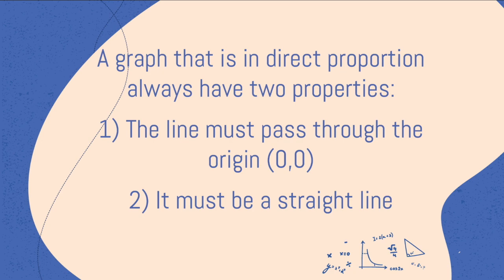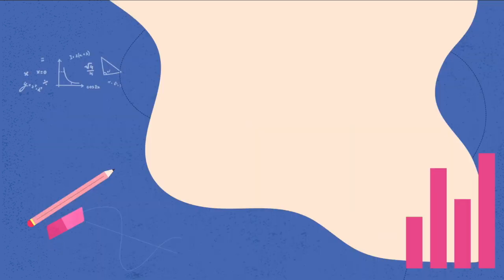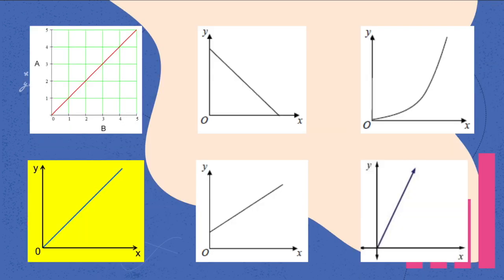Let's take a look at some graph examples and see if we can spot whether they are in direct proportion. Pause if you want to have a go yourself — some of these are in direct proportion and some are not.